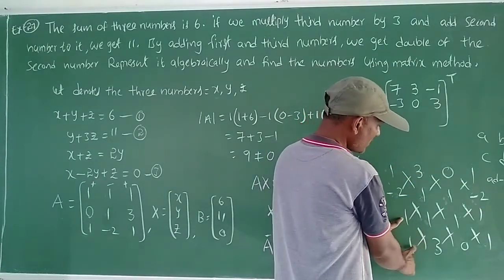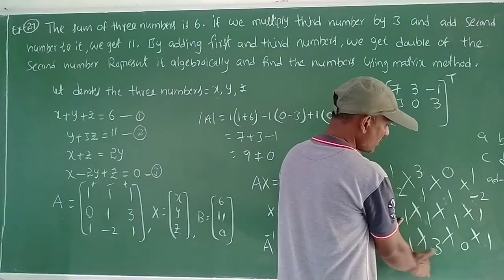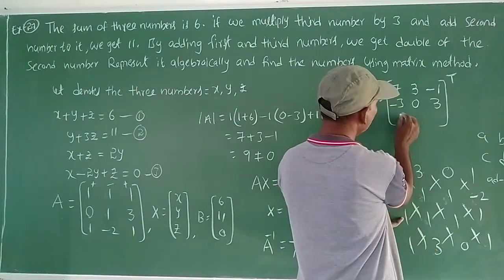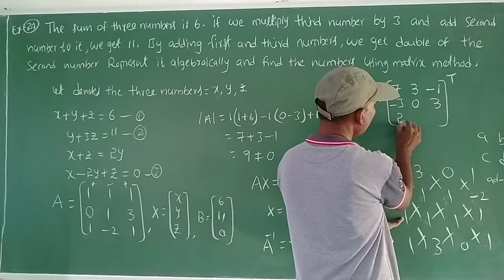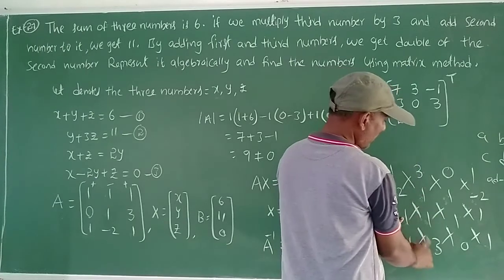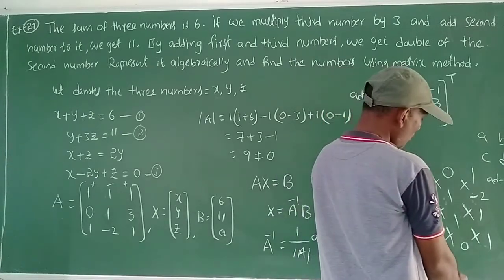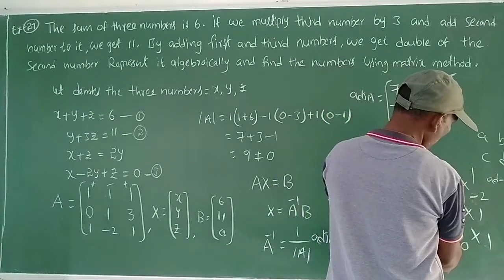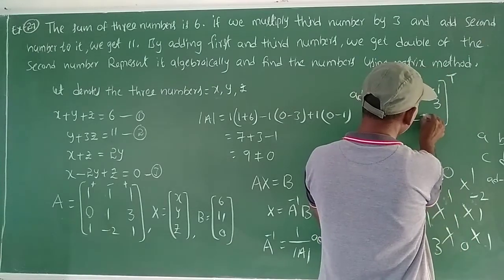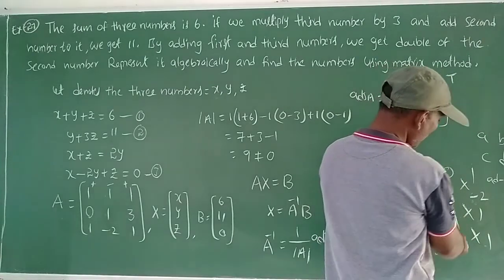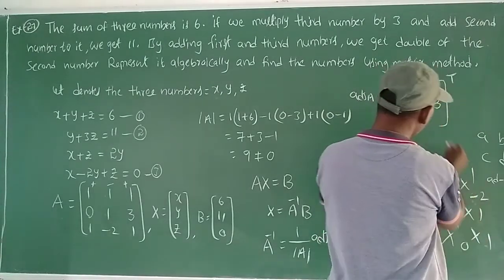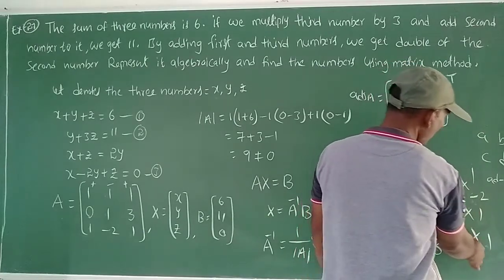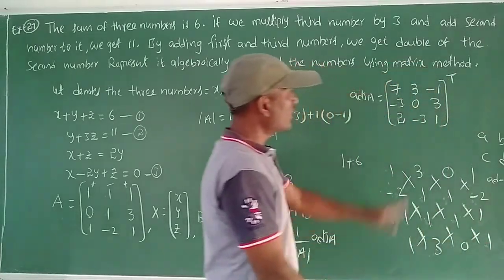AB: 1 into 3 equals 3; 3 minus 1 equals 2. Two numbers close: 1 into 0 equals 0; 0 minus 3 equals minus 3. Then 1 into 1 equals 1; 1 minus 0 equals 1.